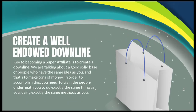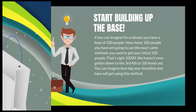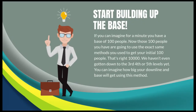Now, create a well-endowed downline. The key to becoming a super affiliate is to create a downline — a good, solid base of people who have the same idea as you, and that's to make tons of money. In order to accomplish this, you need to train the people underneath you to do exactly the same thing as you, using exactly the same methods.